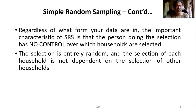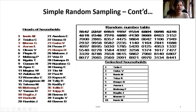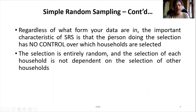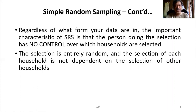In simple random sampling, you don't have any bias because everybody has got an equal chance. Before starting the selection, the probability of selecting any household is 1 by 40. The important characteristic of simple random sampling is that the person doing the selection has no control over which households get selected — the selection is entirely random. Also, the selection of each household is not dependent on the selection of the other households. These are the key characteristics of a simple random sample.